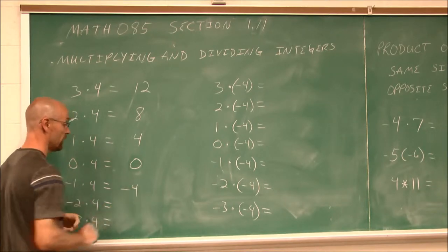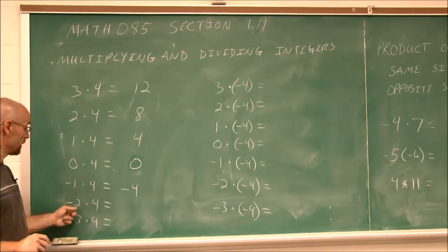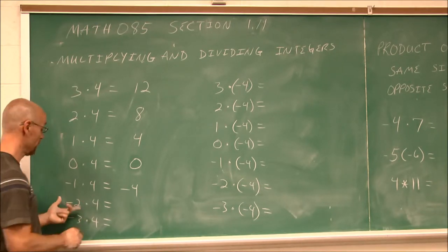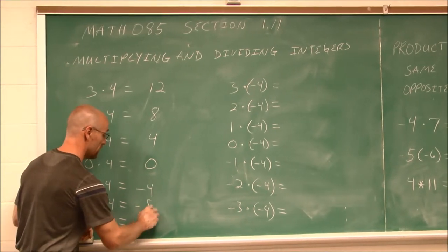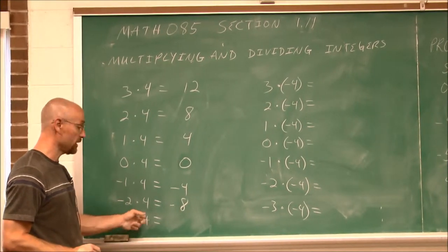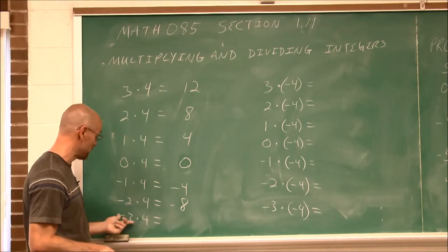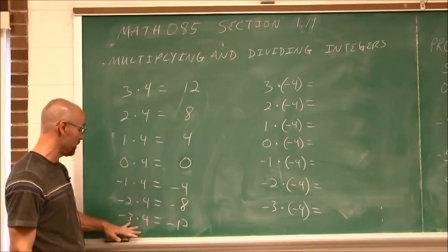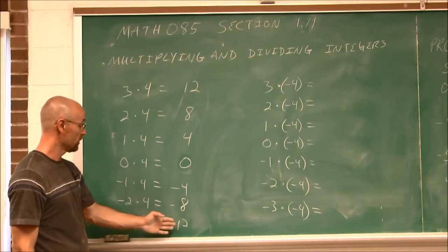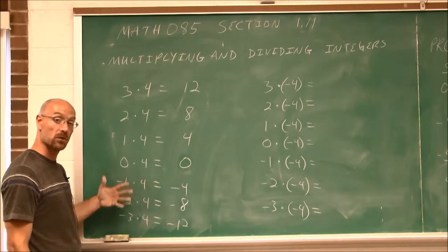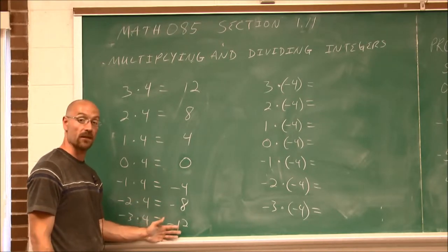Negative 2 times 4 — maybe I owe two people each $4 — negative 2 times 4 would be negative 8. Negative 3 times 4 — so hopefully we see the pattern — negative 3 times 4 is negative 12. Maybe I owe three people $4 each. We can see how when we introduce a negative, it produces a negative answer.